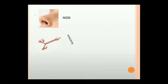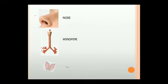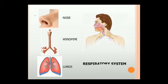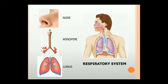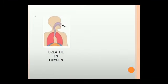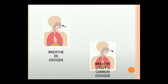Nose, windpipe, and lungs are the parts of the respiratory system. Our lungs help us to breathe in oxygen and breathe out carbon dioxide.